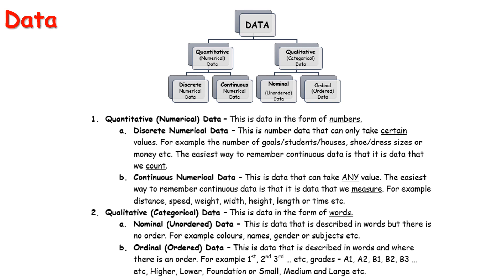Underneath qualitative or categorical data we have what's called nominal and ordinal. Ordinal means a word that has an order to it — like small, medium, large; first, second, third; higher, lower, foundation. All these words have an inbuilt order. Nominal would be unordered — just imagine colours or anything like that; there's no real order to them.